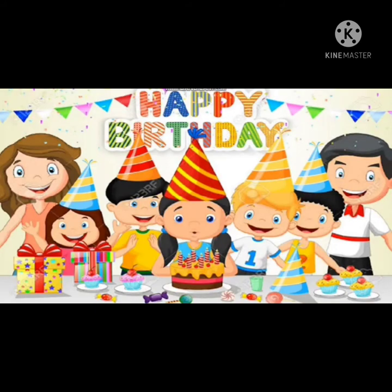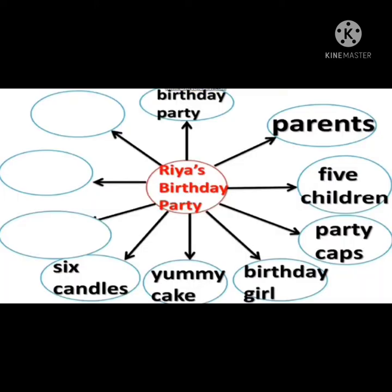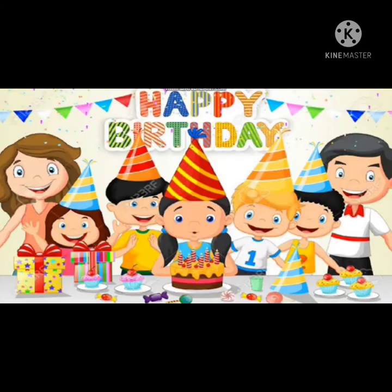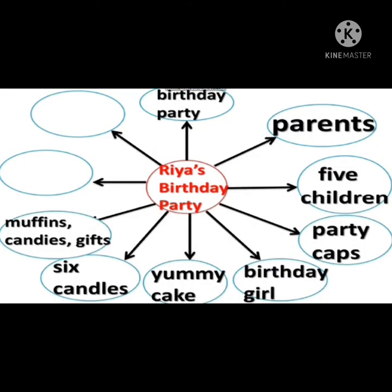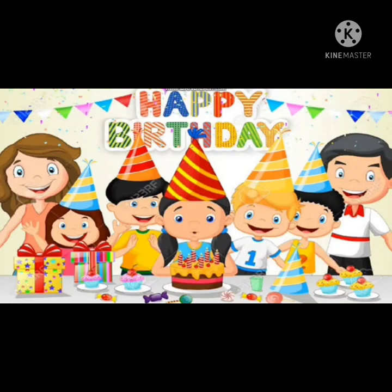The next point is there are some muffins. You can see muffins, candies, and gifts. So we can write here: muffins, candies, gift. After that we can note the decoration — there is a lot of decoration done. You can see at the back, so our next point will be decoration.